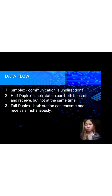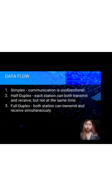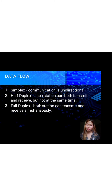A walkie-talkie is a typical half-duplex device. It has a push-to-talk button which can be used to turn on the transmitter but turn off the receiver — therefore once you push the button you cannot hear the person you are talking to, but your partner can hear you. An advantage of half-duplex is that a single track is cheaper than a double track.